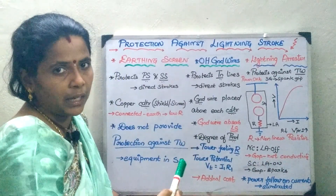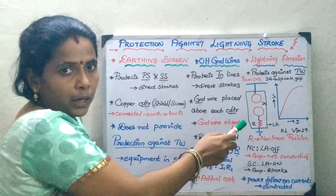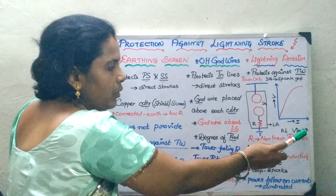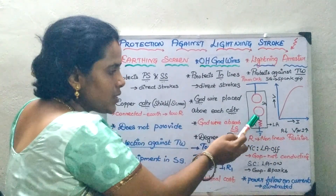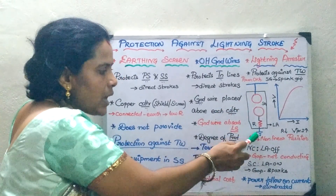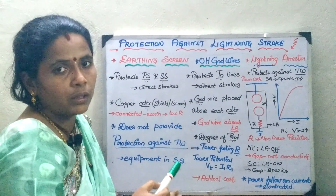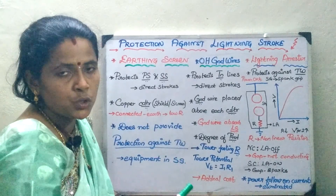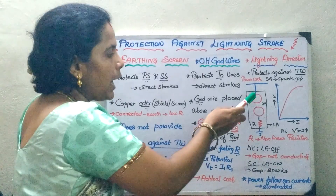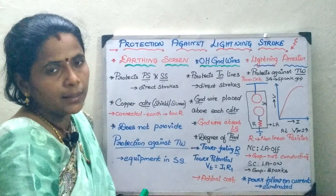Now consider a case where lightning falls. Whenever a lightning is going to fall, you are going to have a very high voltage. In that case this resistor is going to act as a short-circuit path and it is going to drain this high surge to the ground. Whenever you have a high voltage, it should be discharged to the ground through a low resistance path, which is facilitated by arcing over your spark gap and the current is drained via this non-linear resistor.